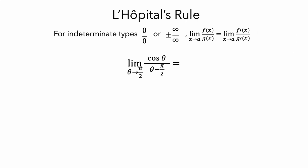So let's think about how we can use L'Hôpital's rule to evaluate this limit. First, both cosine of theta and theta minus pi over 2 are differentiable, so we should be able to apply the rule. We already established that this limit is indeterminate of type 0 over 0. We'll write an LH over the equal sign to remind us that we're using L'Hôpital's rule in this next step. So the limit of this quotient is equal to the limit of a new quotient where, according to the rule, we use the derivatives of the original numerator and denominator.